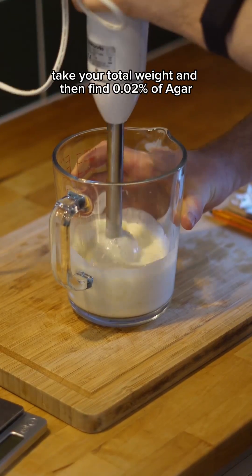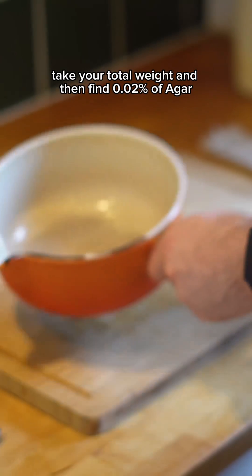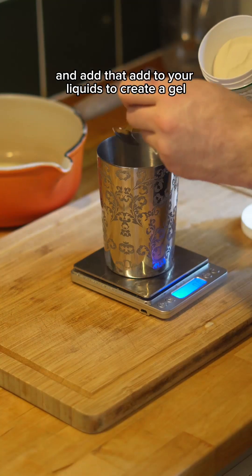To dumb it down, take your total weight and then find 0.02% of agar and add that. Add it to your liquids to create a gel.